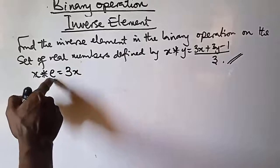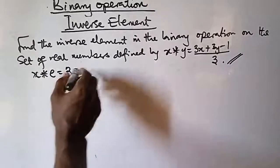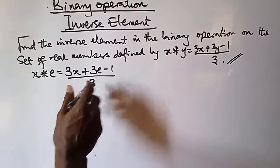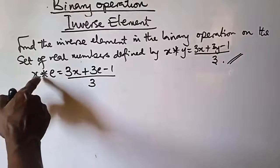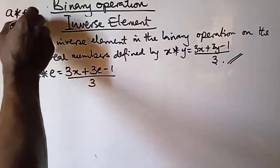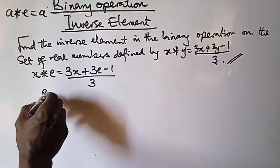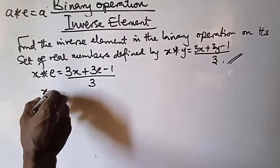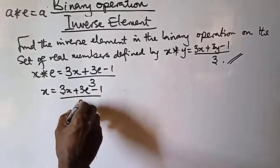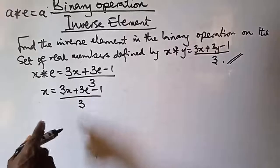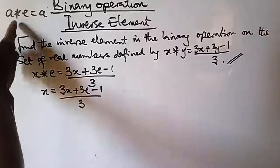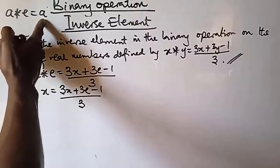Wherever you see y, replace it with e, so you have 3x plus 3e minus 1, all over 3. We said earlier that x operation identity element gives you x, by the rule that a operation e gives you a. So here we have x equals 3x plus 3e minus 1 over 3. Someone may ask how did I get this x — by the virtue of this rule that a operation e gives you a, so x operation e still gives you x.